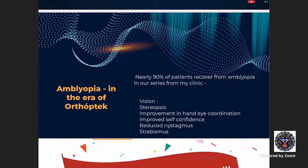90% of patients recover from amblyopia in my series with orthoptic treatment, because it improves vision, stereopsis, and hand-eye coordination, which improves the handwriting of children and their self-confidence. The attention area is connected to the convergent center more than the divergent center, so medial recti act more — not because the muscle is stronger, but because a greater area of attention is devoted to medial recti. Improvement of squint also improves self-confidence in children.